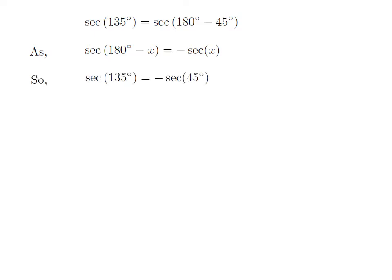Let us apply the above identity for secant of 135 degree. Here, x is 45 degree. So secant of 135 degree is equal to minus secant of 45 degree.